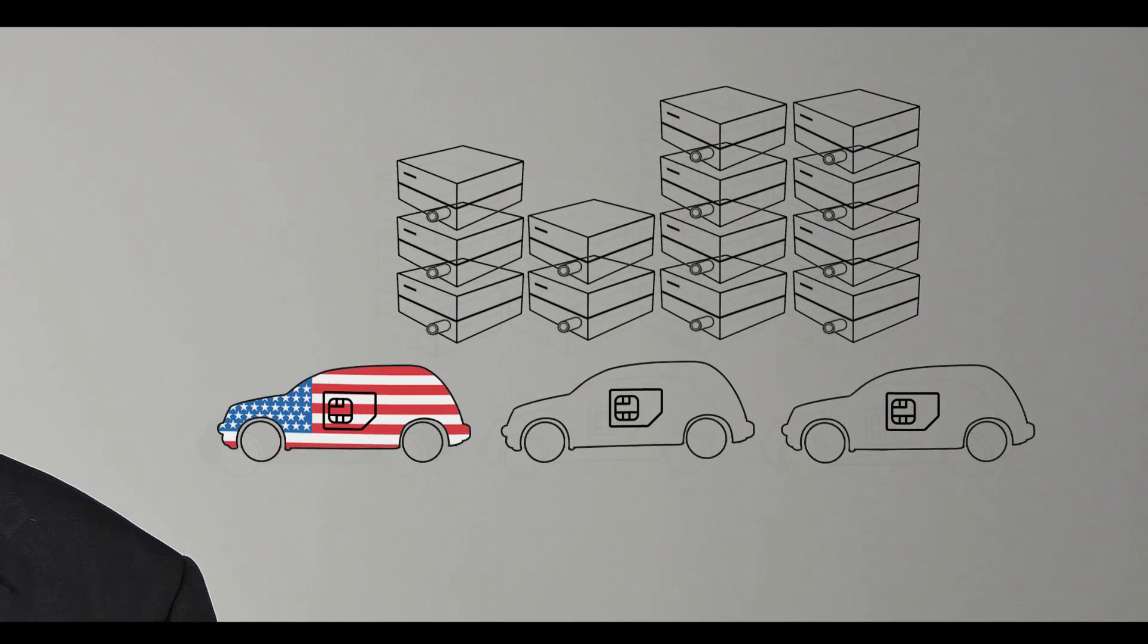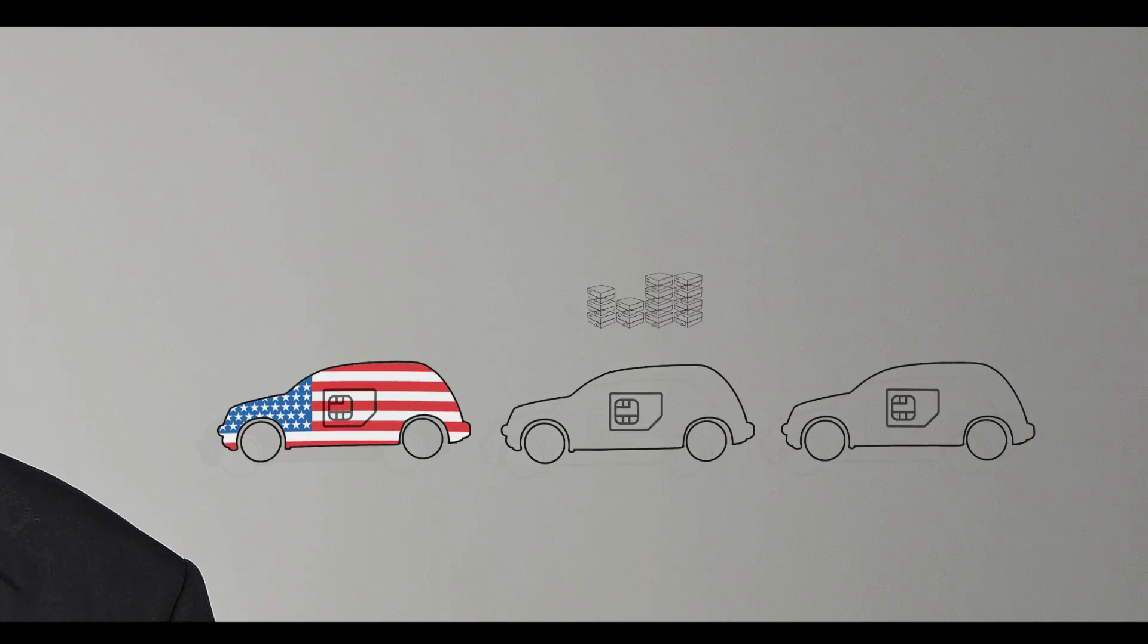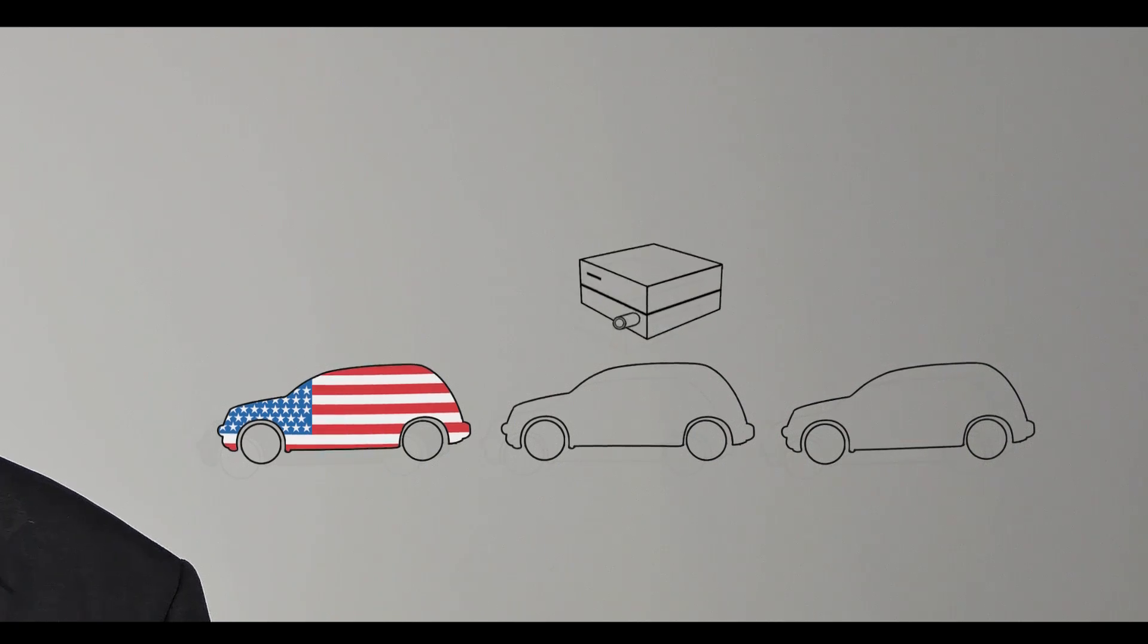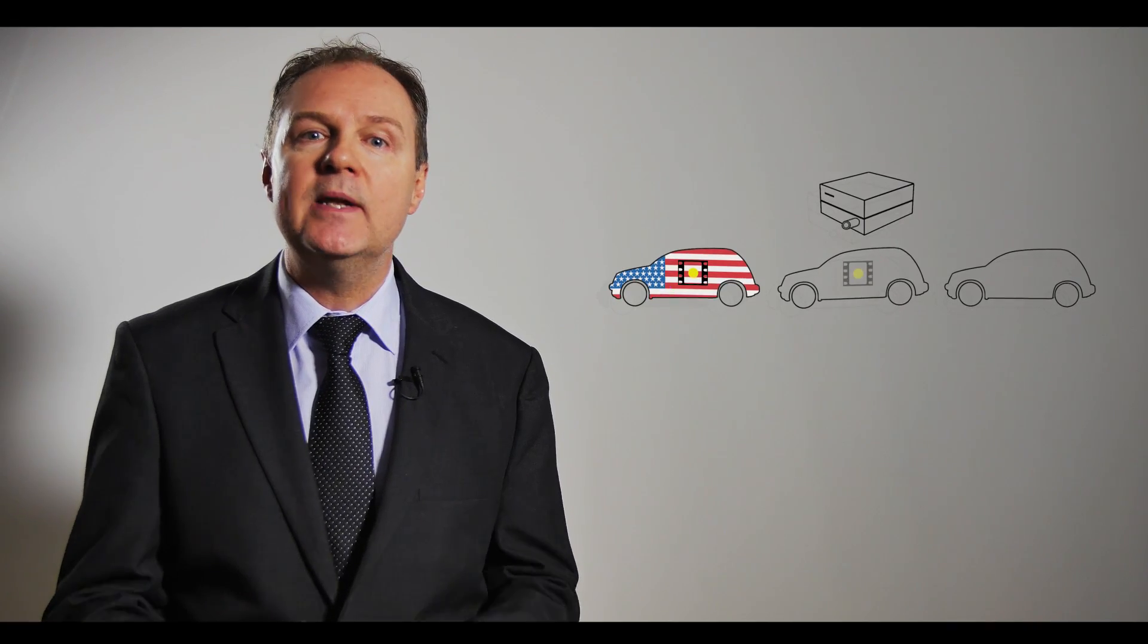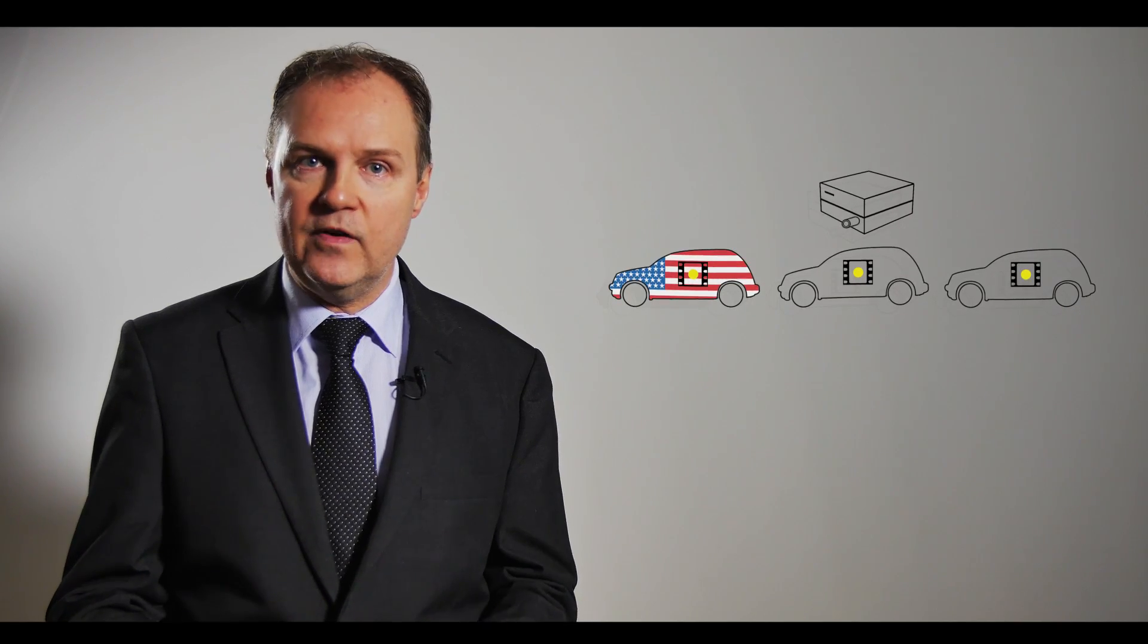So how can we improve things? Imagine we could reduce that pile of wireless modules down to one, and inside each car we place a SIM chip. Now those SIM chips have a bootstrap profile, as shown in yellow, but much later on in the production cycle we can decide which actual profile, which we call an operational profile, to download.